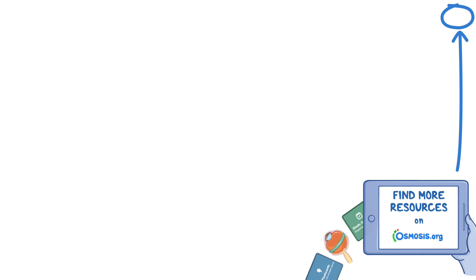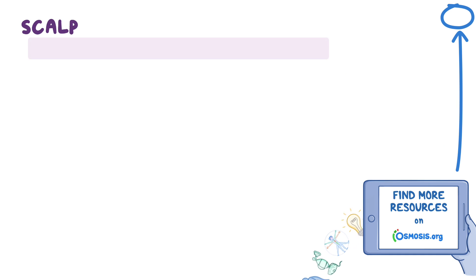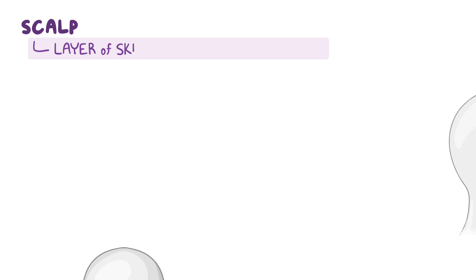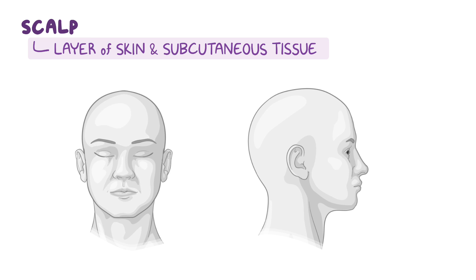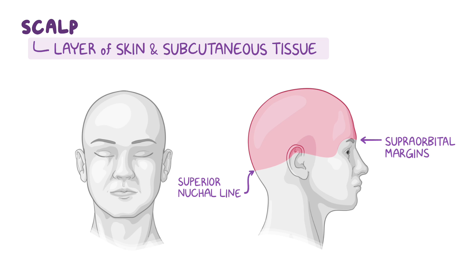Let's start with the scalp, which is a layer of skin and subcutaneous tissue that covers the cranium. It extends from the supraorbital margins on the frontal bone to the superior nuchal line on the occipital bone. Laterally, it covers the temporal fascia and extends to the zygomatic arches on each side.